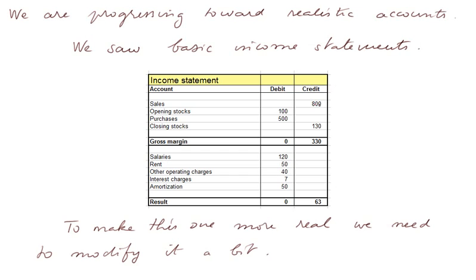We have sales of 800 — we can think of millions of euros. We have the calculation of the COGS we already saw. We have a gross margin of 330, and various charges: salaries and fringes of 120, rent of 50, and other operating charges of 40. Interest charges from a loan of 7, and amortization of the year of 50. This yields a result of 63.